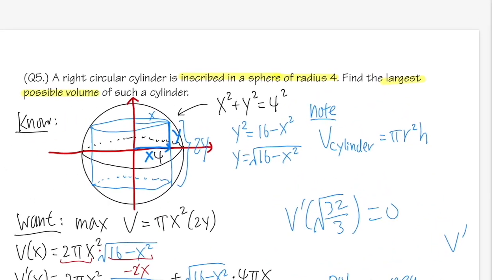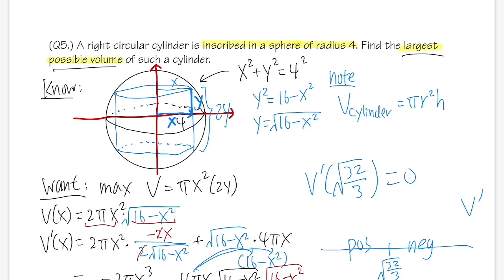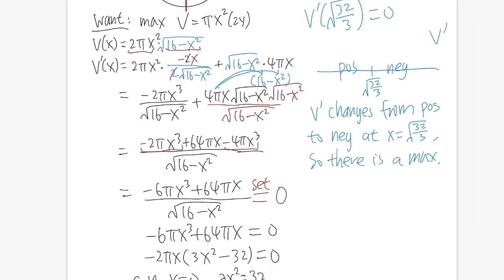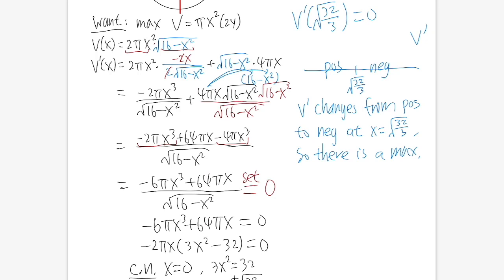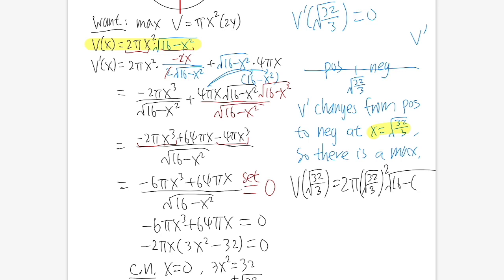Now we plug the critical number into the volume formula. V(√(32/3)) = 2π·(32/3)·√(16 − 32/3). Inside the square root: 16 − 32/3 = 48/3 − 32/3 = 16/3, so √(16/3) = 4/√3. Therefore V = 2π·(32/3)·(4/√3) = 256π/(3√3). That is the maximum volume.